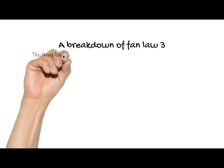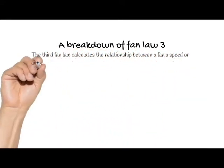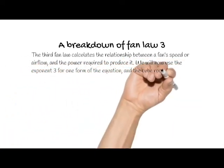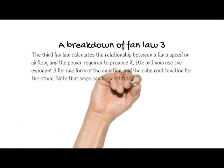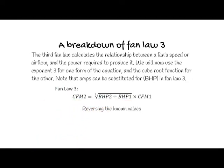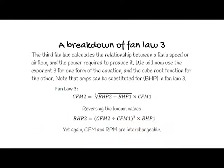On to fan law 3. The third fan law calculates the relationship between a fan's speed or airflow and the power required to produce it. We will now use the exponent 3 for one form of the equation and the cube root function for the other. Note that amps can be substituted for brake horsepower in fan law 3. Fan law 3 states CFM2 equals the cube root of (brake horsepower 2 divided by brake horsepower 1), multiplied by CFM1. If we reverse the known values, brake horsepower 2 equals (CFM2 divided by CFM1) cubed, multiplied by brake horsepower 1. CFM and RPM are interchangeable.